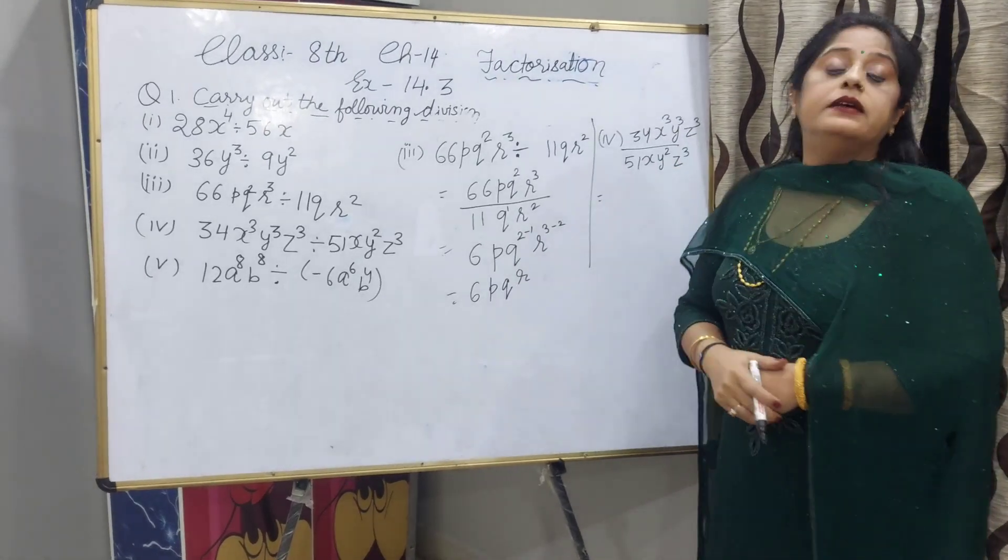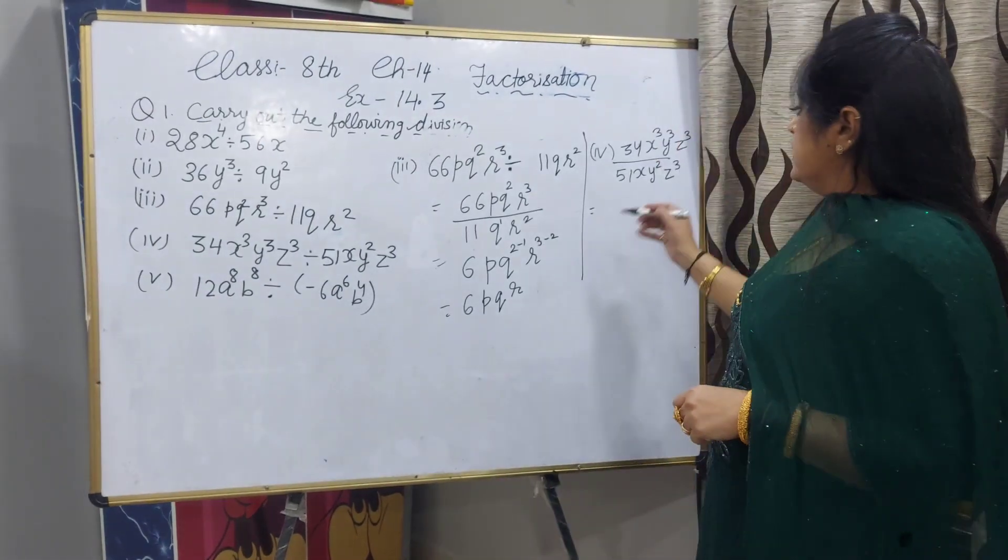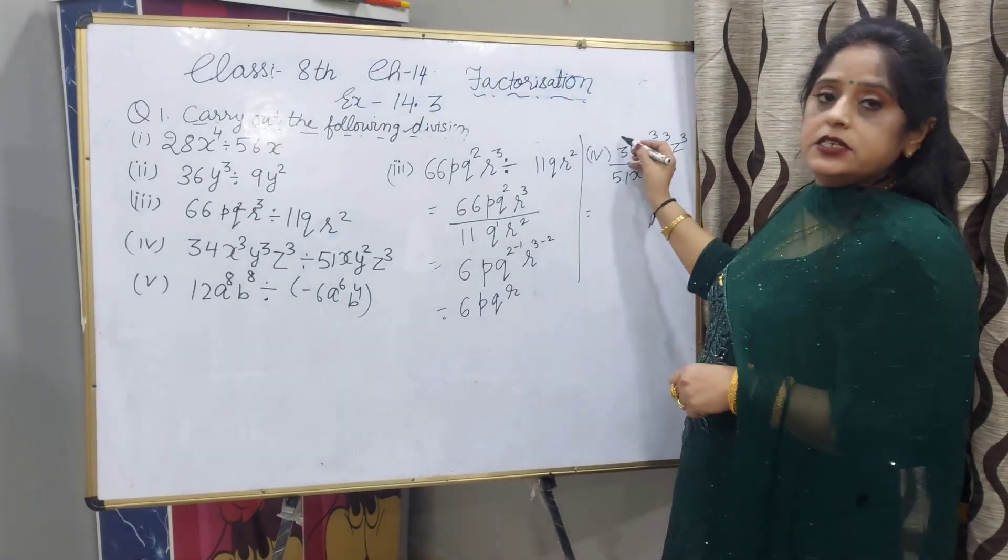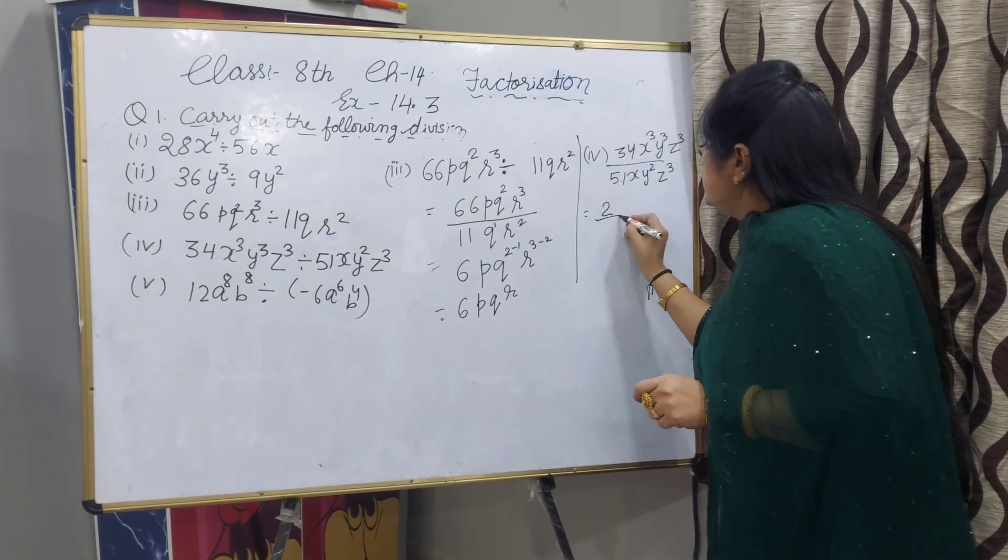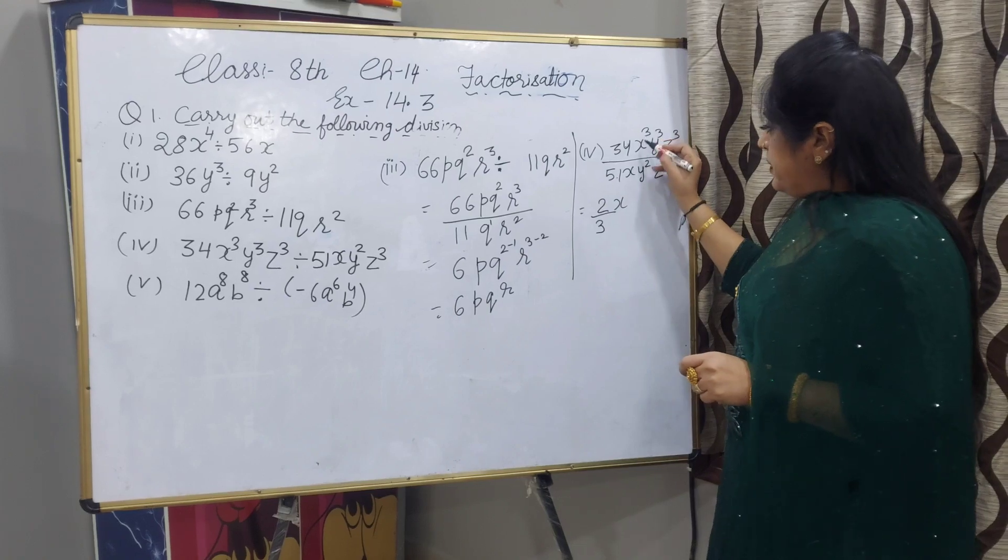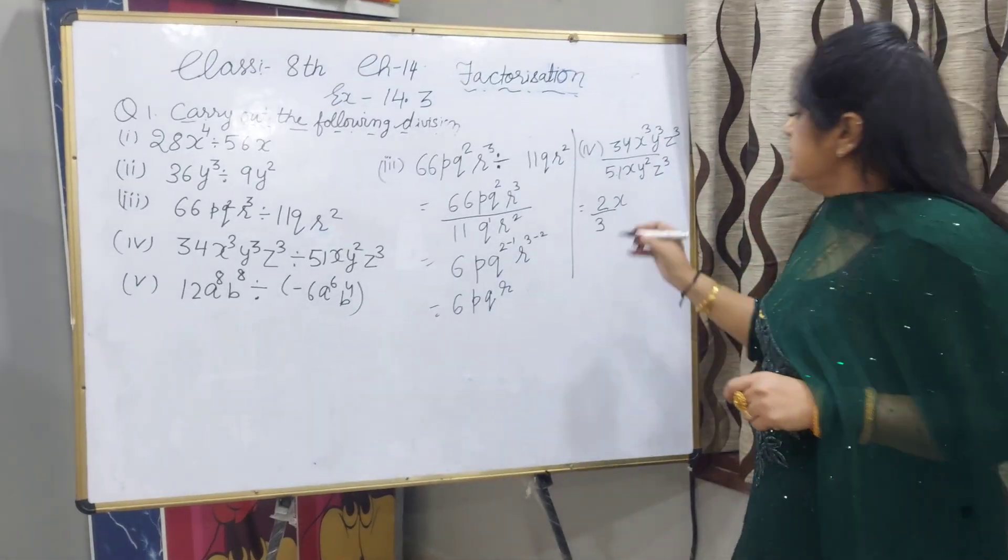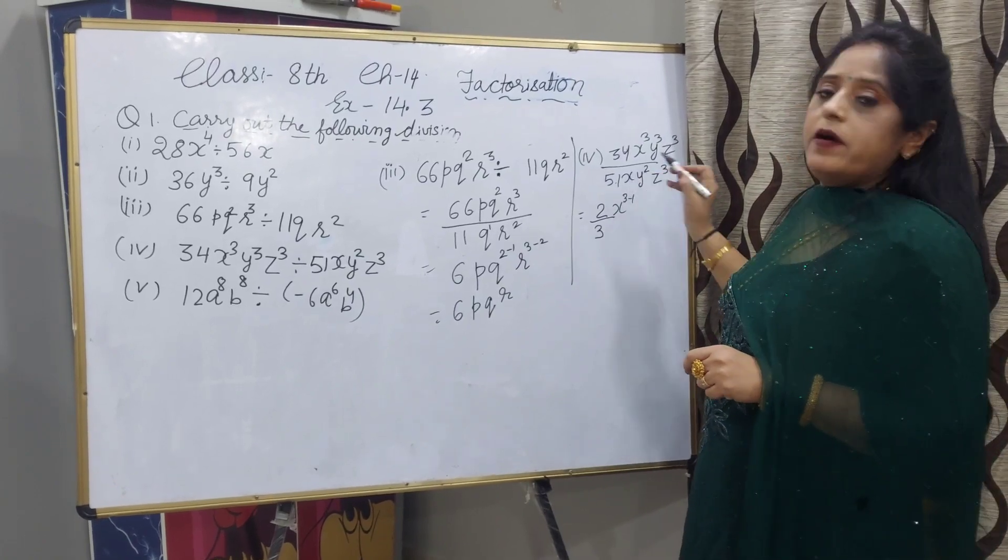34 and 51 are divisible by the table of 17. 17 times 2 is 34 and 17 times 3 is 51. So we can write 2 by 3. x bases are same, power will be subtracted. x power 3 minus 1, if x has no power means 1.